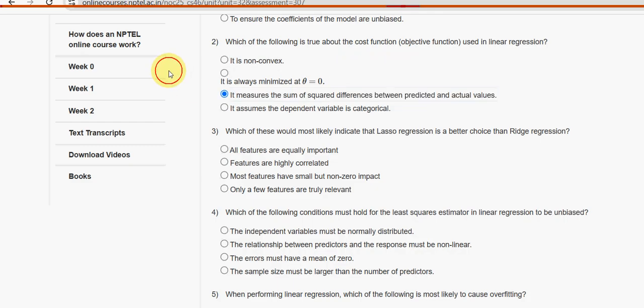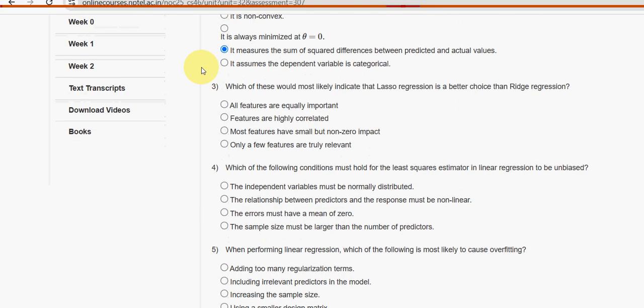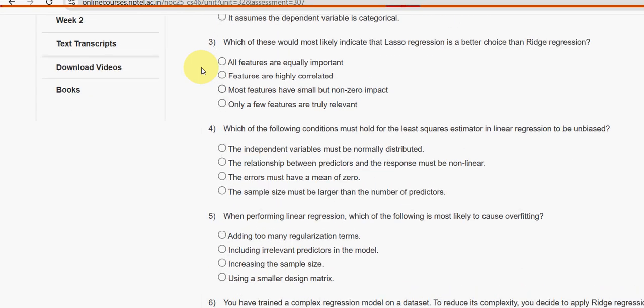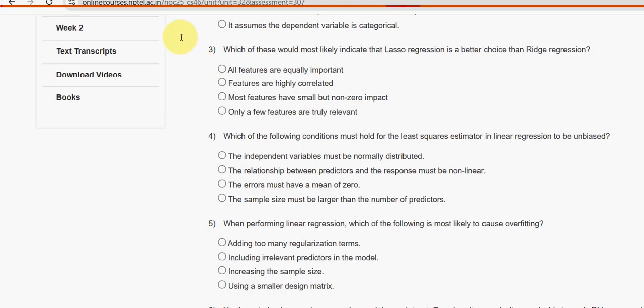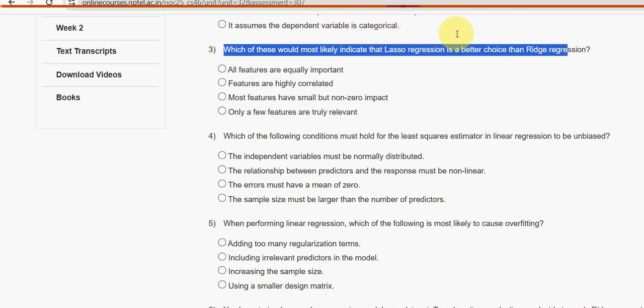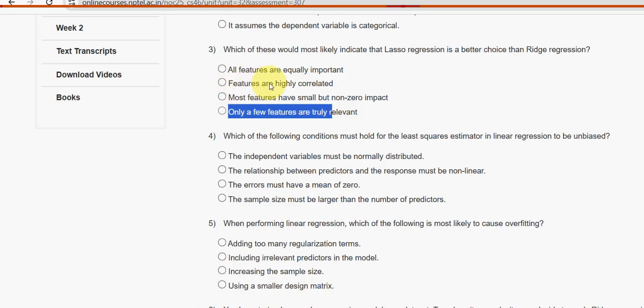Now let's move on to the third question. Which of these would most likely indicate that lasso regression is a better choice than ridge regression? For the third question, the fourth option is the probable one. Only a few features are truly relevant.